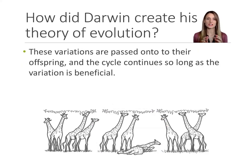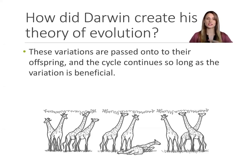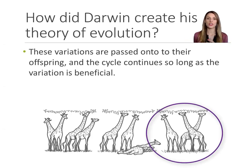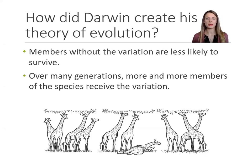The third pillar is that these variations, these adaptations, are then passed on to the offspring of the surviving members, and the cycle of passing this adaptation on to the next generation continues for as long as the variation is beneficial. You see in the third illustration on the right, the two taller giraffes have made a baby, and that giraffe is also tall. Members of the species who do not have that adaptation do not survive and do not reproduce. Over many, many generations, more and more members of the species will have that adaptation for as long as it is beneficial.